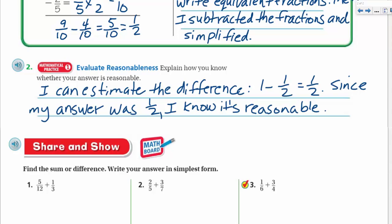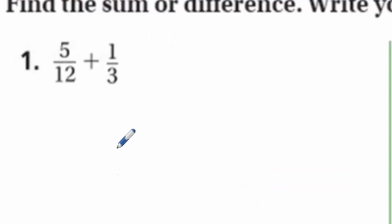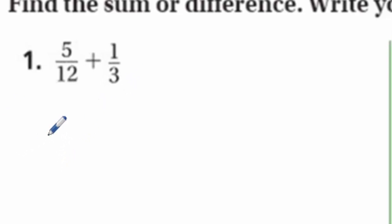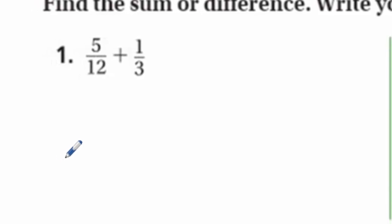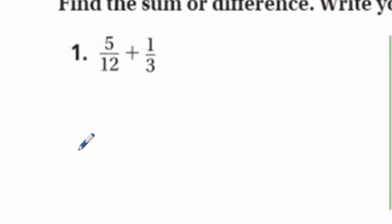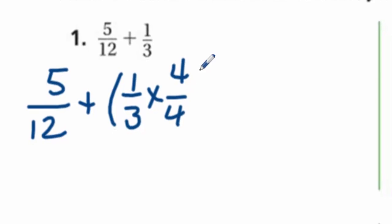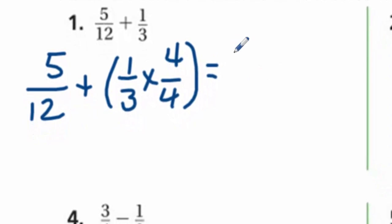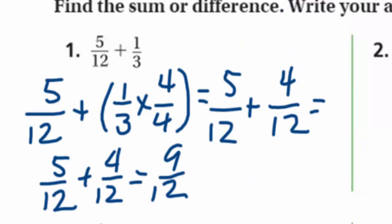Now it's time for Share and Show. So, you want to pull out your little math board and put the video on pause. Find the sum or difference. Write your answer in simplest form. So, I'm looking at this, and I got a little bit of work here. It says five-twelfths plus one-third. I'm immediately seeing that twelve is a multiple of three. So, I'm going to put five-twelfths plus, and I'm going to put one-third times four over four. That's going to be equal to four over twelve. Now, I'm just adding those together.